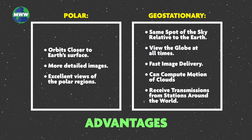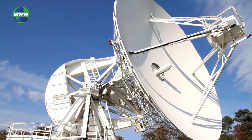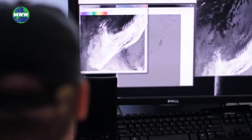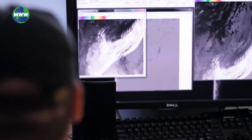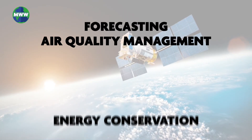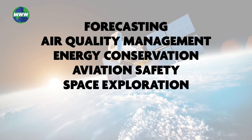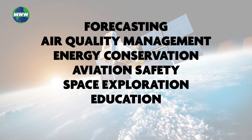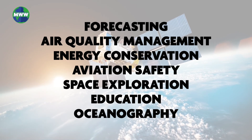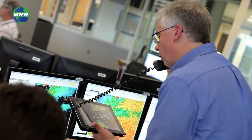Here are some advantages and disadvantages of each type of satellite. As a satellite meteorologist, you can work in a variety of industries in the private or public sector involving forecasting, air quality management, energy conservation, aviation safety, space exploration, education, or oceanography. Having meteorologists that work at analyzing and interpreting satellite images and data helps to better understand our planet's weather.